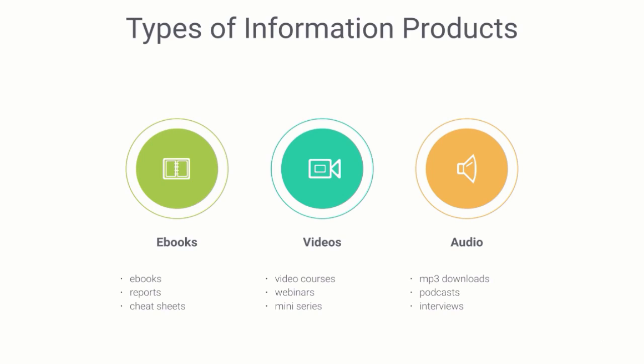Throughout this course, we're going to be talking about ebooks and videos. To quickly mention it, you could sell videos and then extract the audio and have that as a separate bonus download, or even sell that audio by itself separately so people can listen while they're in the car or jogging. I just wanted to quickly touch on the different types of information products and break that down so you understand it doesn't have to be a full-length ebook or a massive video course. I'll see you in the next video.